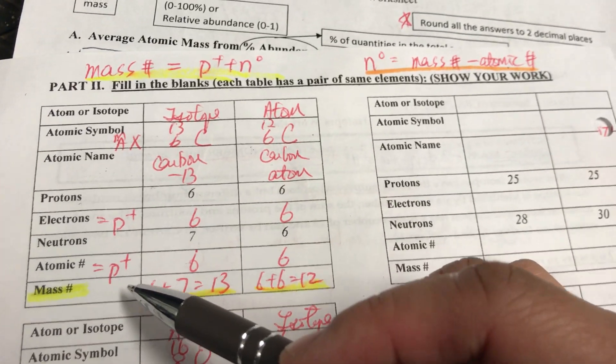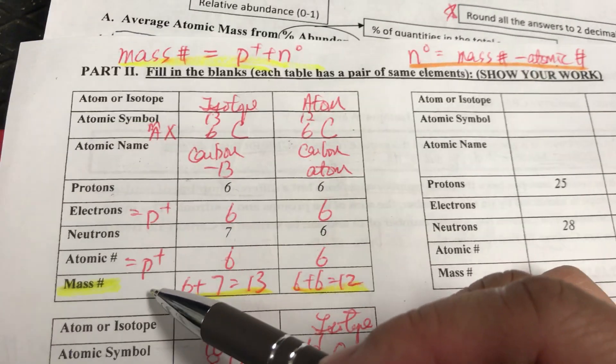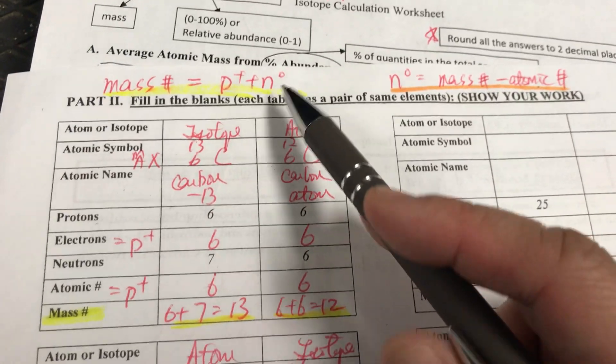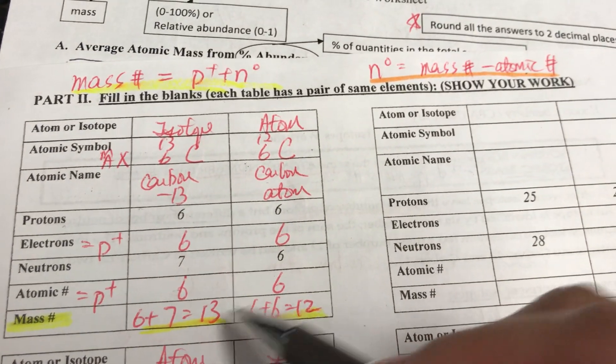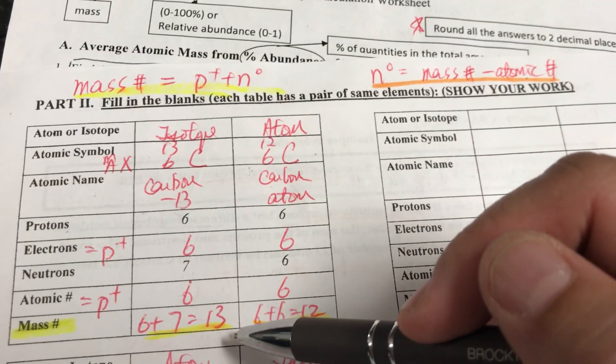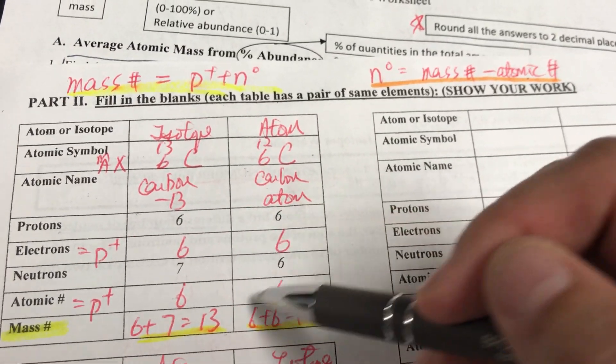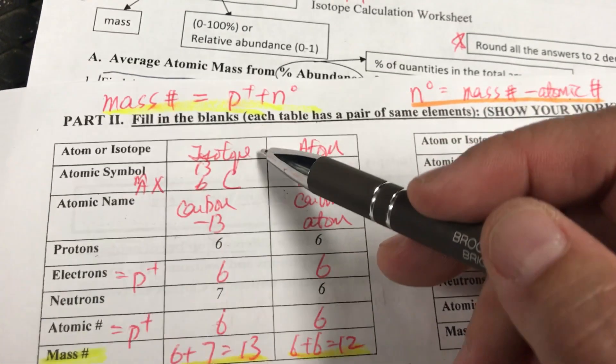We were not given atomic mass, so we can't round atomic mass to become mass number because we don't have it. So we have to add the proton and neutron together to become 13 and 12. You have to show me your map. We filled the electron with the atomic number and the mass.